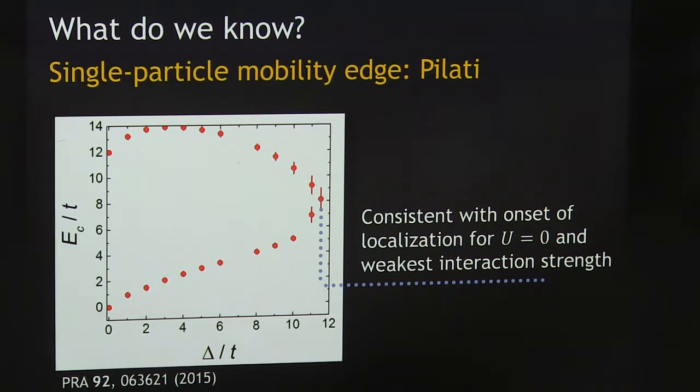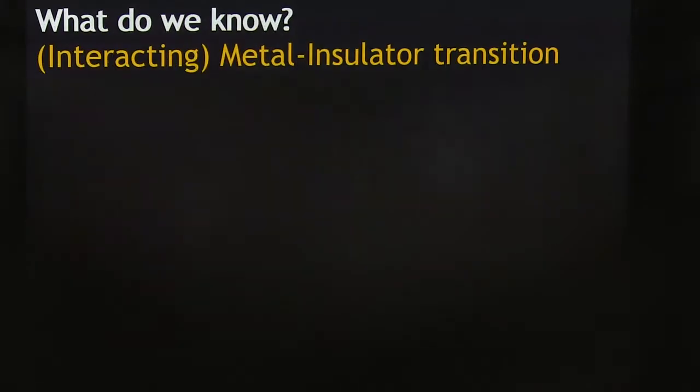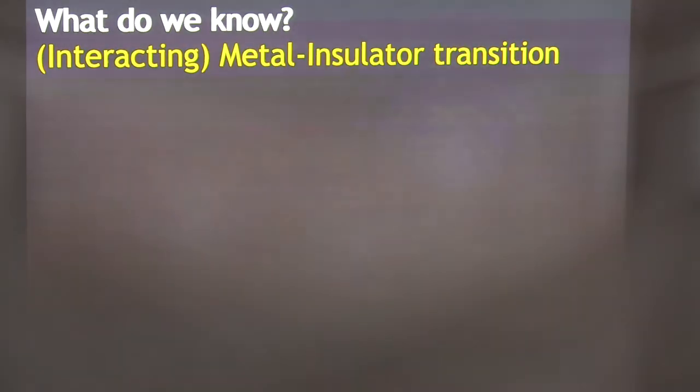Let me tell you about localization measurements. These are measurements we published back in 2015 where we were able to observe a metal-insulator transition. Something we know is that there is a metal-insulator transition in the system.